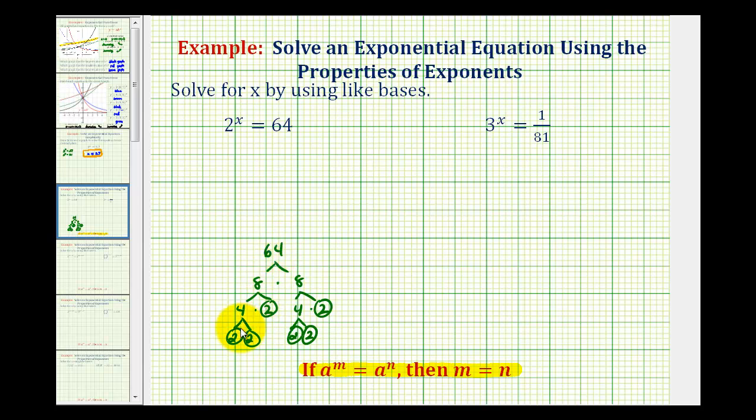Notice how 64 contains 6 factors of 2, which means we can rewrite this equation as 2 to the power of x equals 2 to the power of 6. Since our bases are the same and these are equal to each other, x must equal 6, which is our solution.